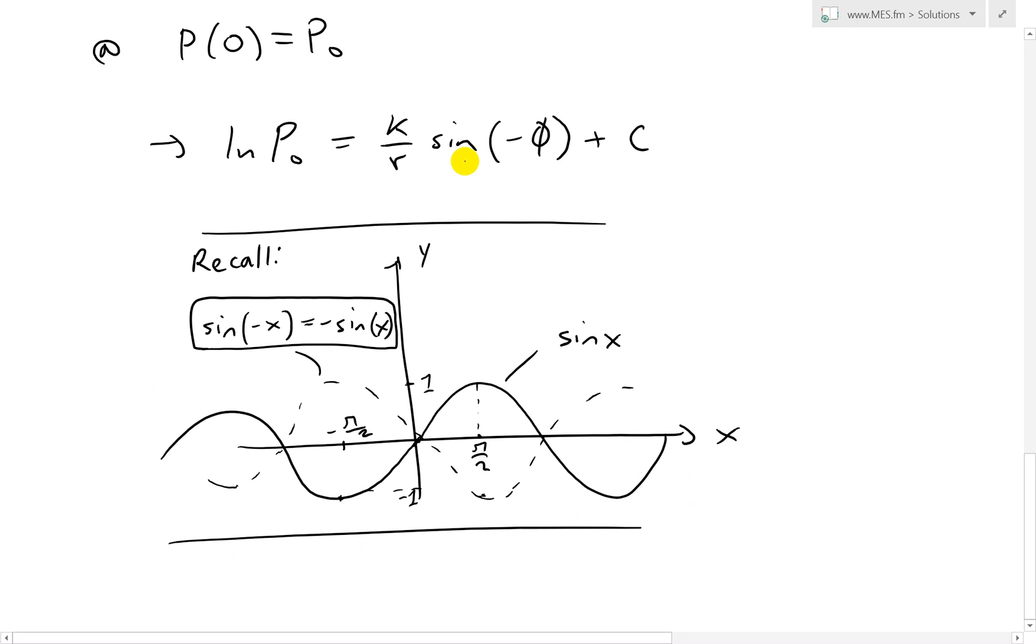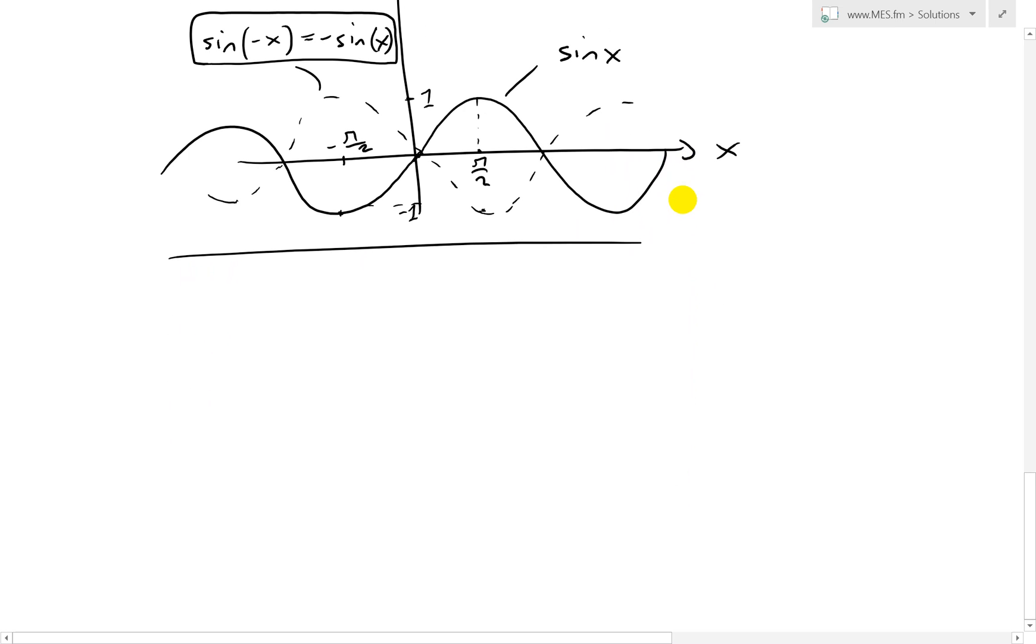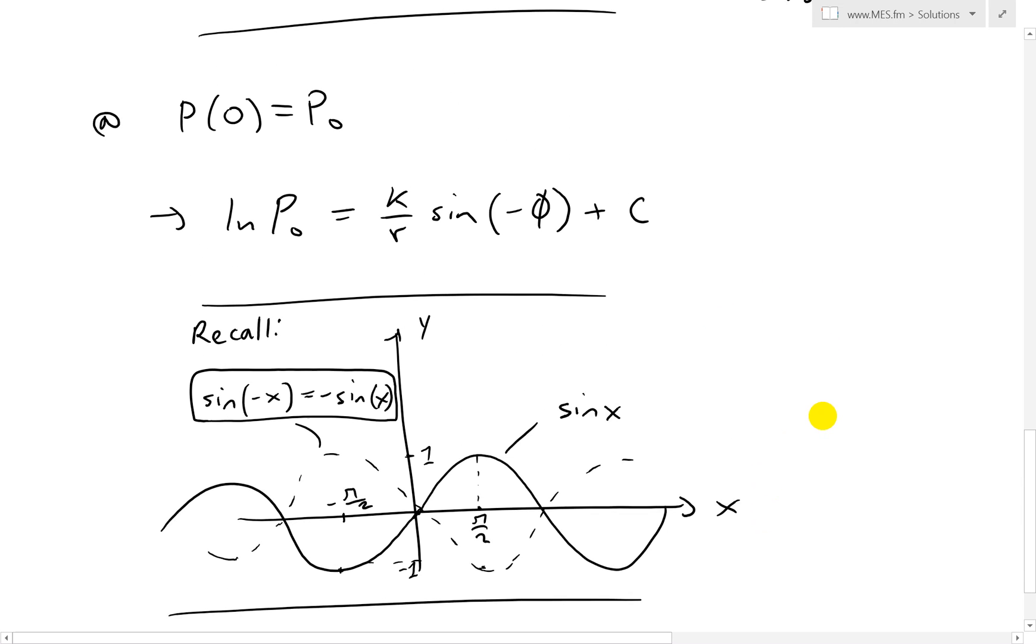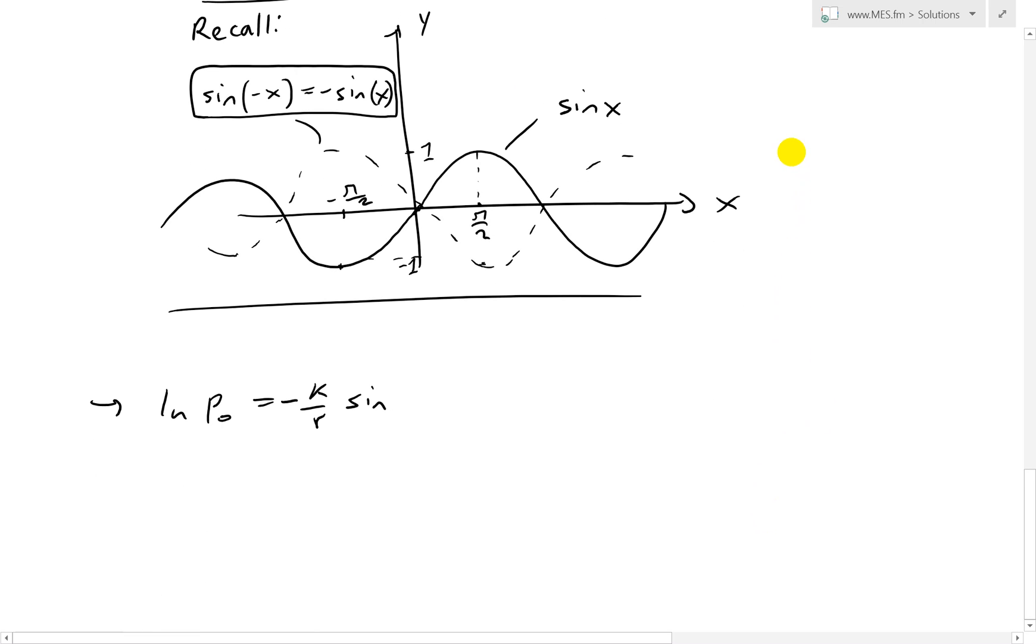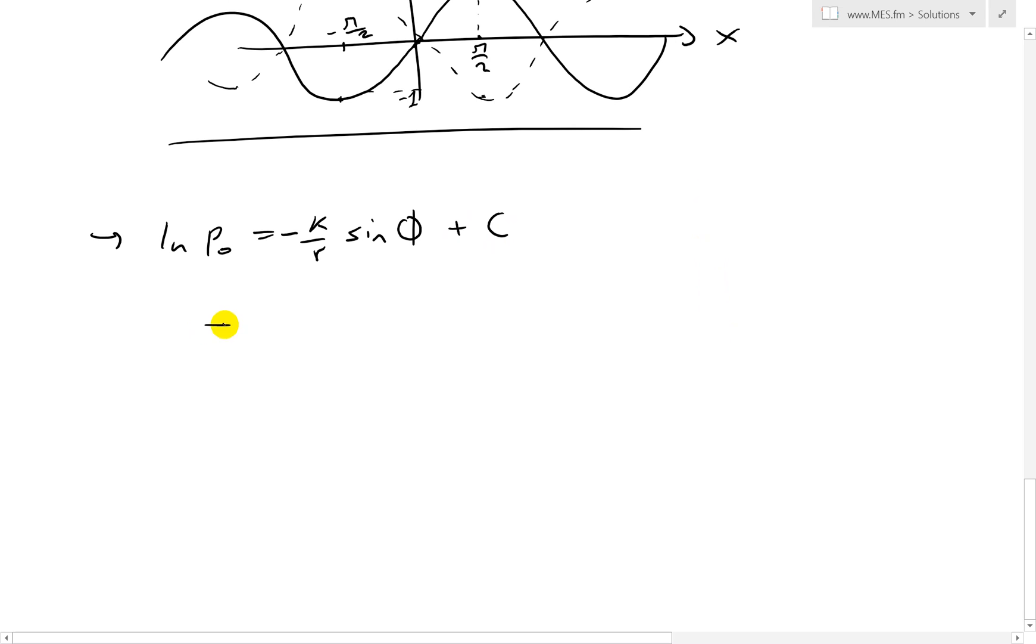So what we have now, we could plug that in just to simplify this, get rid of that negative sign. So we have ln of P0 equals to K over R. I'll put a negative now, so it equals to negative K over R sine. Let's go back here. So this negative, put that out of there, and this is just negative sine phi plus C. And now we could simplify and get C is equal to, move this over to the other side, ln P0 plus K over R sine phi. So there is our C.